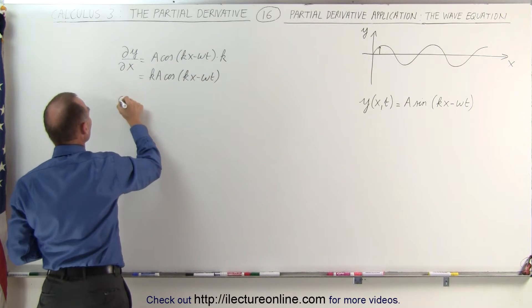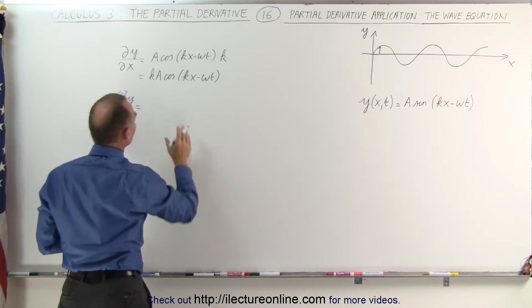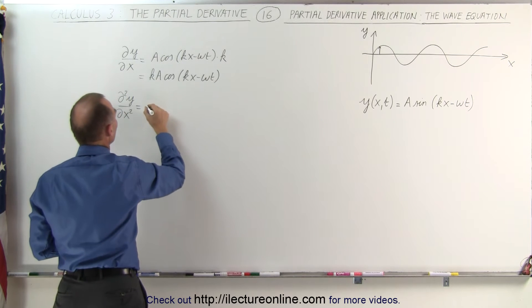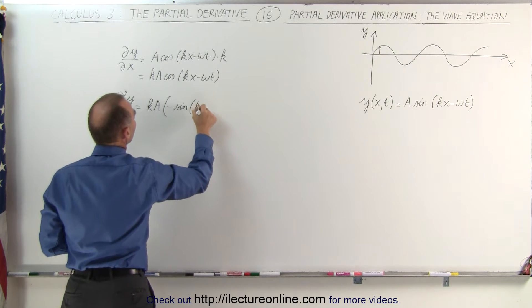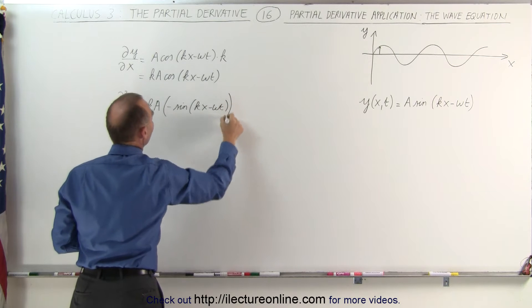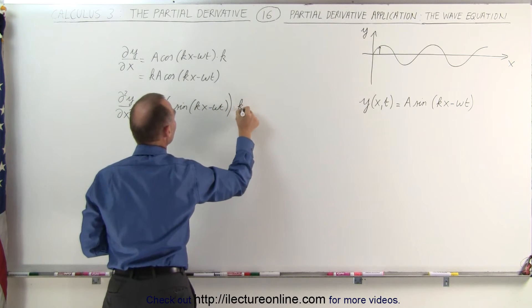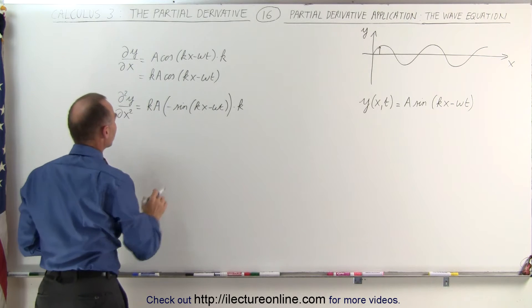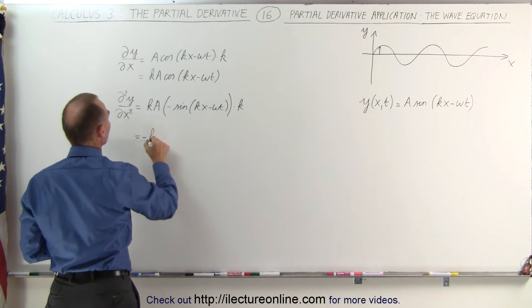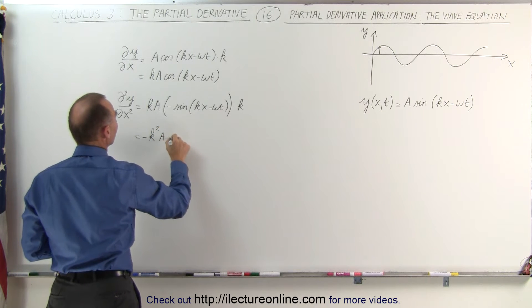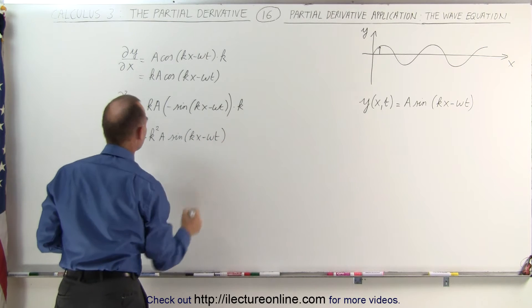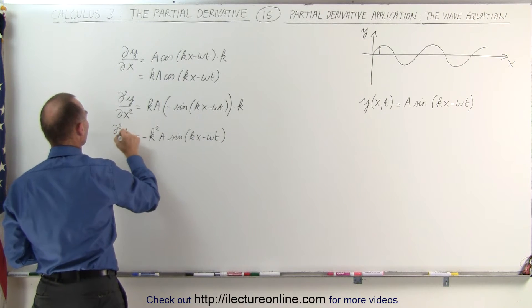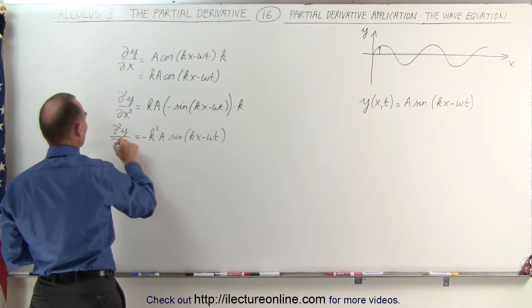Now we take the second derivative of the function y with respect to x. We take the derivative of the cosine, which is the negative sine. We get kA times the negative sine of kx minus omega t, times the derivative of the angle, which again is times k, because omega t is a constant. That becomes equal to minus k squared times A sine of kx minus omega t. And that's the second partial derivative of the function with respect to x.